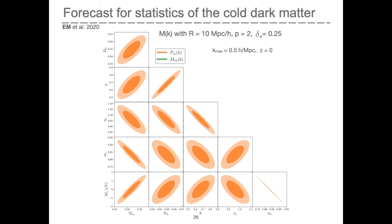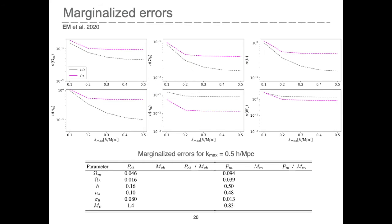In the plot, I'm showing in orange the results for the power spectrum of the cold-dark matter field used as a benchmark, and in green the results for the mark power spectrum. The marked power spectrum can tighten the power spectrum constraints on all cosmological parameters by a significant amount. These results were obtained using statistics up to k_max equal to 0.5 h/Mpc, but we can also look at the marginalized errors as a function of k_max. The dashed lines show results for the unmarked power spectrum — grey for the CB field and magenta for the M total matter field. Including larger k_max means including more modes in the analysis and in principle more information. However, the information in the power spectrum saturates at k_max equal to 0.2.